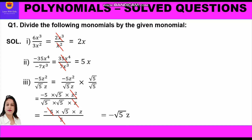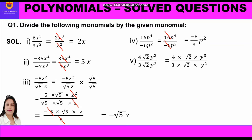Now the fourth part: 16p⁴ divided by -6p². We cancel 16 and 6 by the factor of 2, giving 8 and 3. So we get -8/3, and p⁴ divided by p² gives p². The final answer is -8/3·p².